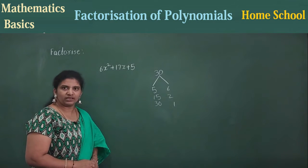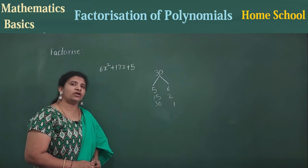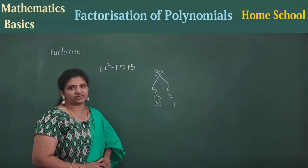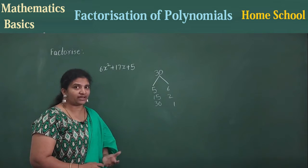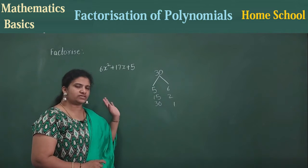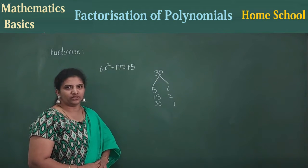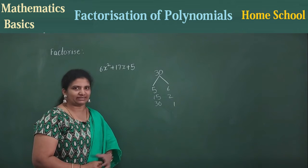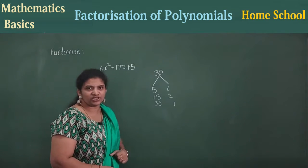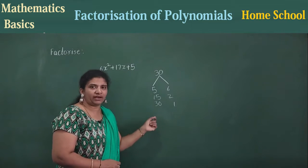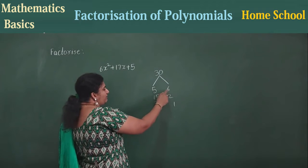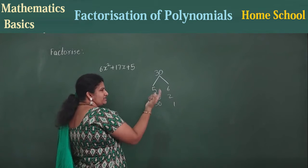Listen carefully. The first step: multiply the numbers and write aside, then find all the factors for that value. When you are learning polynomial factorization, check all the factors. Once you know this method properly, no need to write all the factors — only one pair you need to write directly. Now see the factors: either you may add or subtract, you should get the middle value, that is 17.